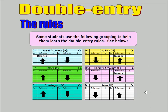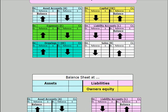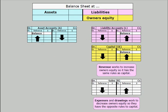Some students like to group the ledger accounts as they appear on the screen to help them remember the double entry accounting rules — it's a method that's been successful in the past. However, there are other ways to remember double entry rules. One of those methods is to think about a balance sheet, where normally assets are on the left hand side and equities are on the right hand side. Assets are shown by debit entry increases and equity accounts are the reverse.